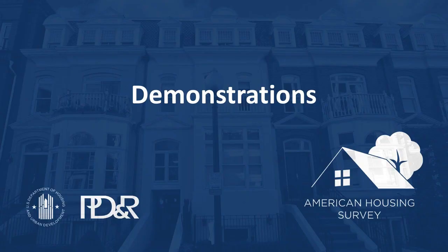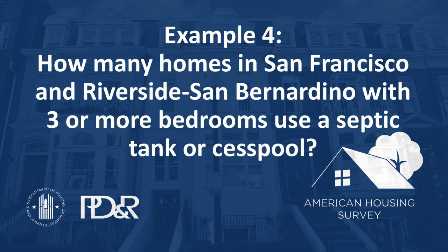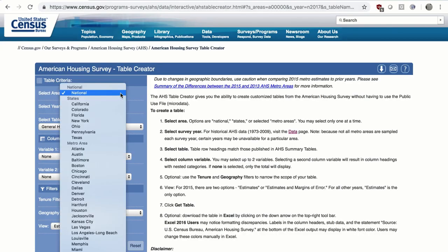Now let's look at how to create metropolitan tables. Please be mindful that currently only one geographic area can be selected at a time; however, data can be downloaded and compared in Excel. Example 4: How many homes in San Francisco and Riverside-San Bernardino with 3 or more bedrooms use a septic tank or cesspool?